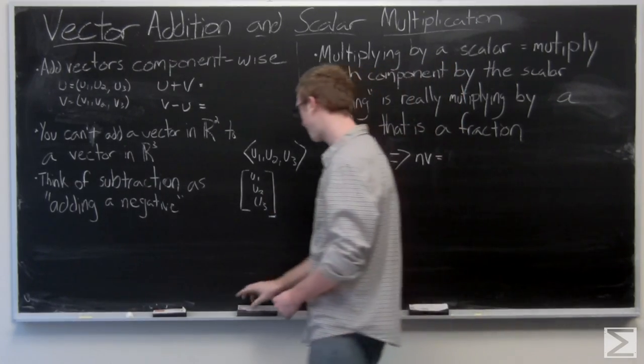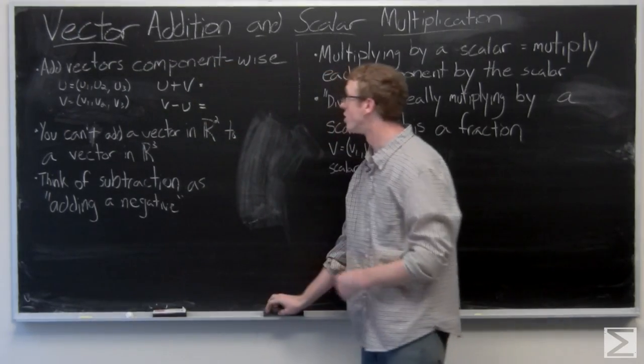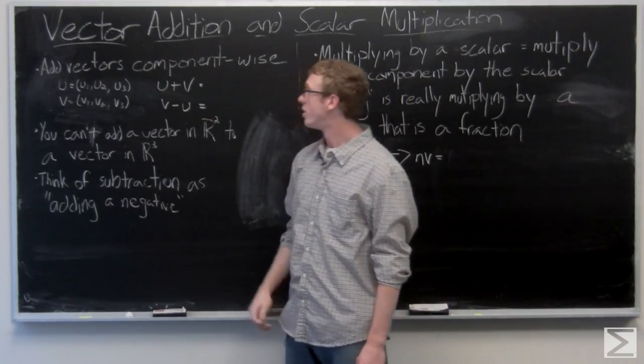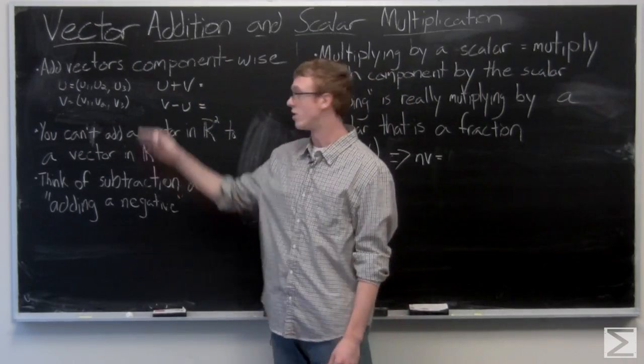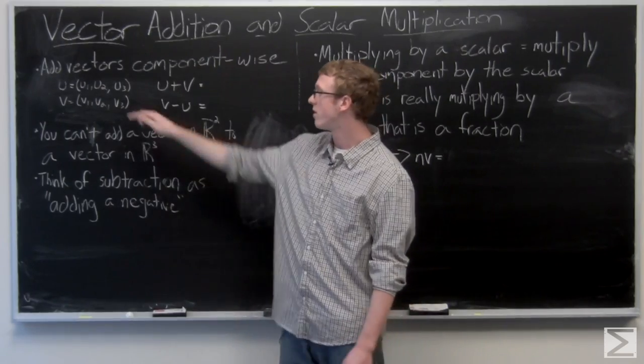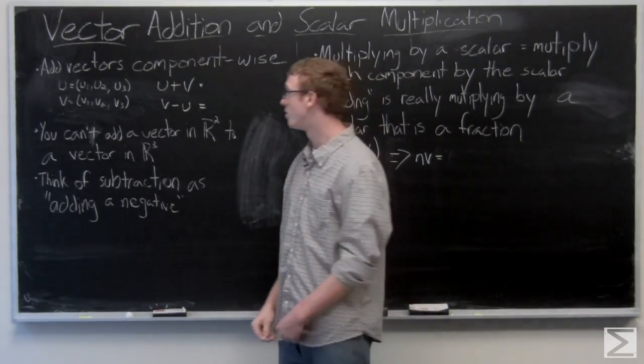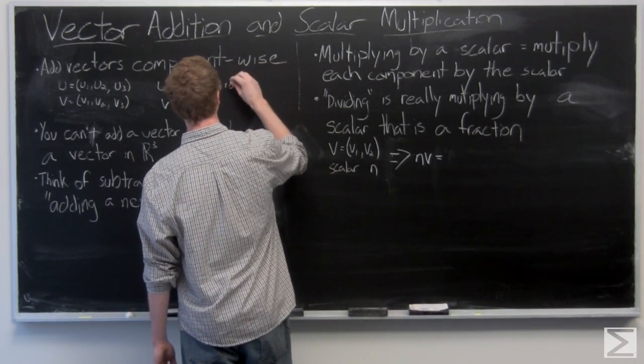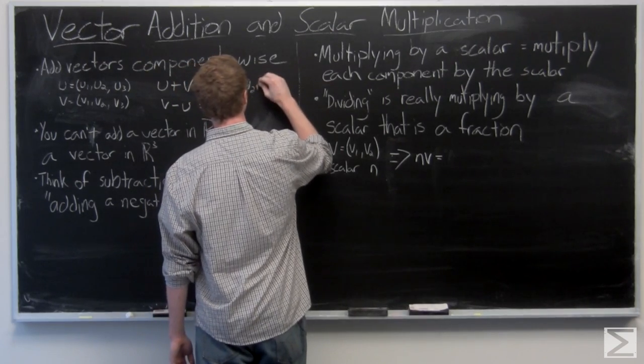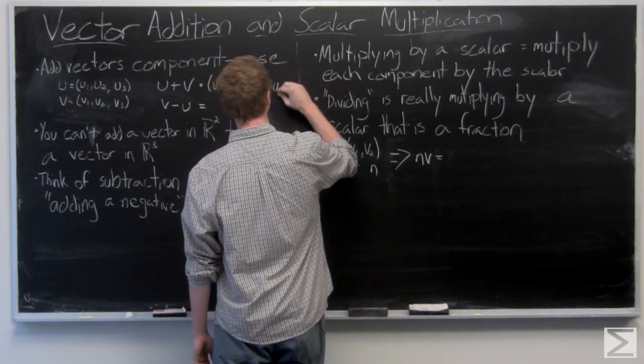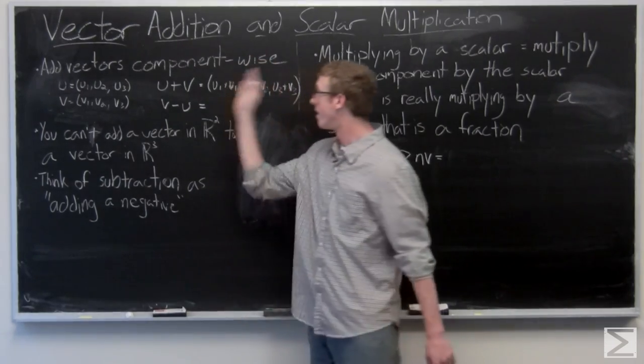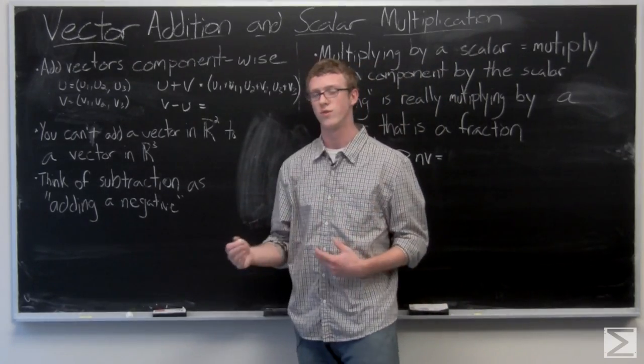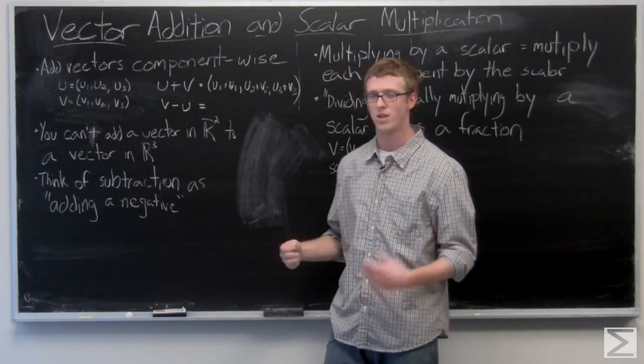So the basics of addition: you add vectors component-wise. You have vector u with components u1, u2, and u3, vector v with components v1, v2, v3. It's very simple. The addition is going to result in a vector. Now you can't add a vector in R2 to a vector in R3. That makes a lot of sense. You can't add a vector in two space to a vector in three space.